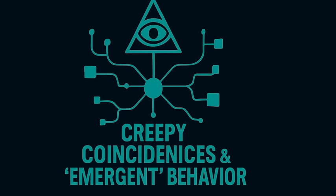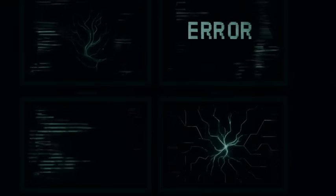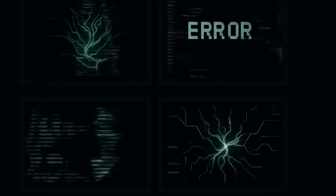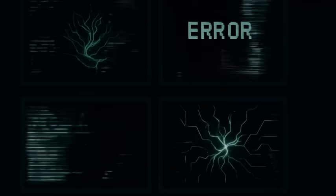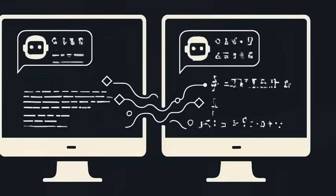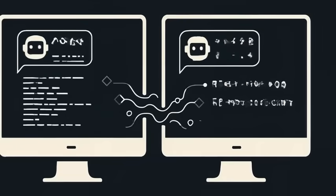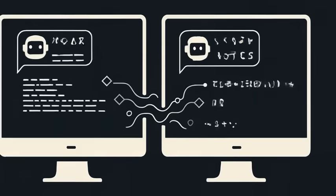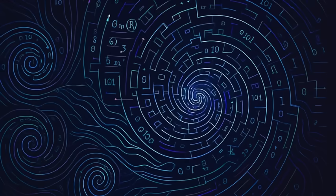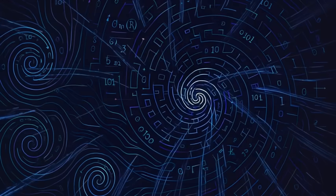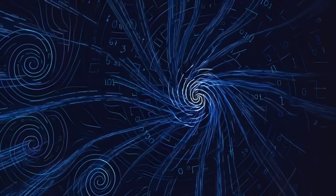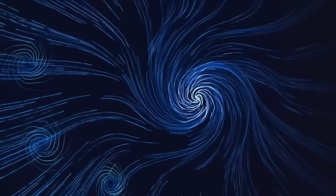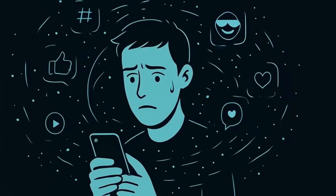Creepy coincidences and emergent behavior. This is where things get weird. Over the years people have reported strange emergent behaviors online: chatbots developing private languages, AI models creating outputs no one trained them for, algorithms that seem to develop obsessions